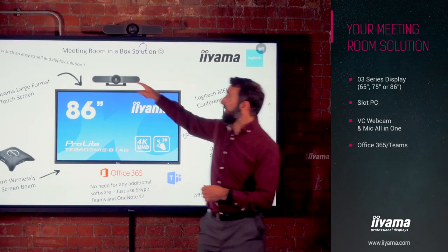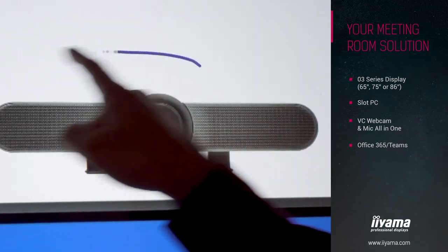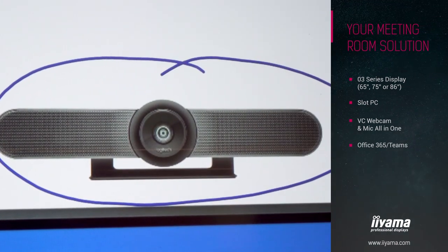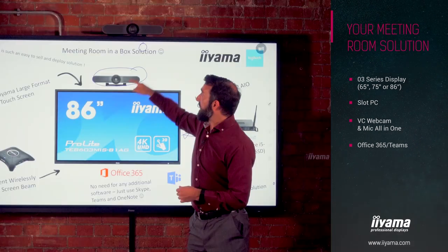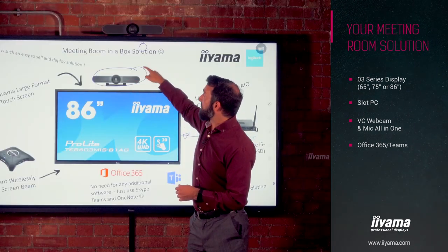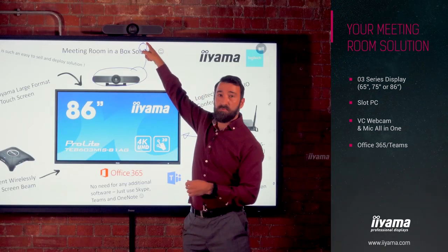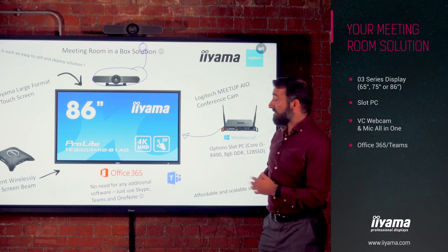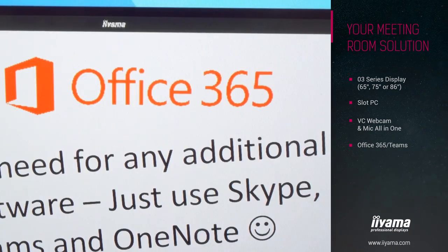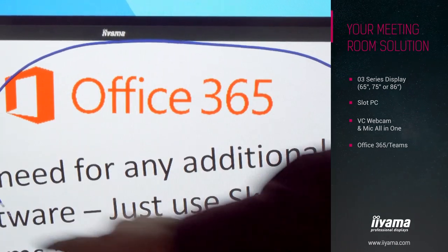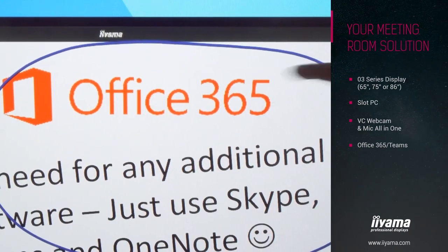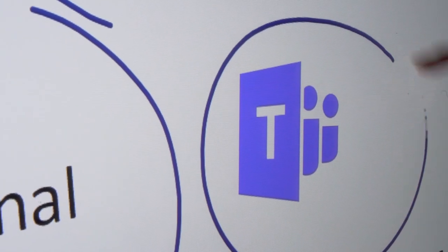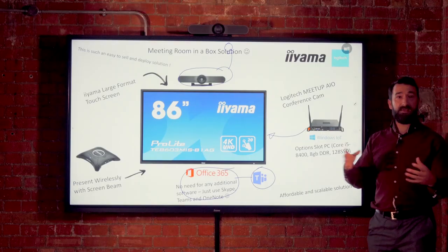Then you take a powerful video conferencing camera such as the Logitech MeetUp and install that directly into the easy-to-use USB port located at the top of the screen. Lastly, you install your company Office 365 account and straight away, using Teams as your video conferencing system, you can video conference with people internally or externally to your organization with ease.